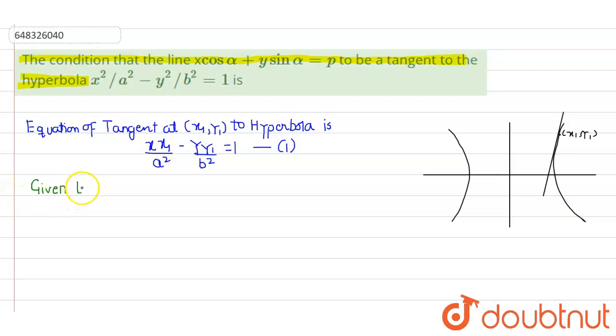And it is given that the equation of line is: x cos α plus y sin α equals p. It can also be rewritten in the form x cos α/p plus y sin α/p equal to 1.